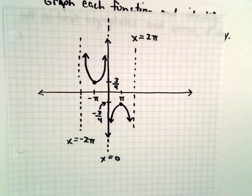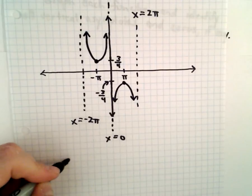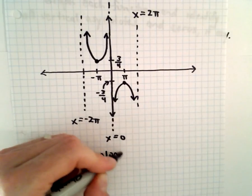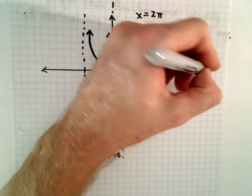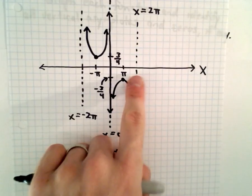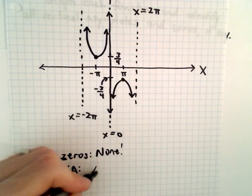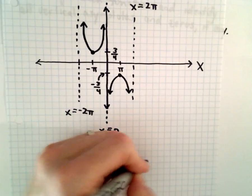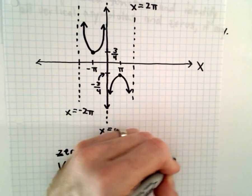So in this case, the zeros, well again, there are none. Cosecant doesn't cross the x-axis. The vertical asymptotes are going to occur at multiples of two pi. So we can write that by saying x equals two pi times n, where n is an integer.